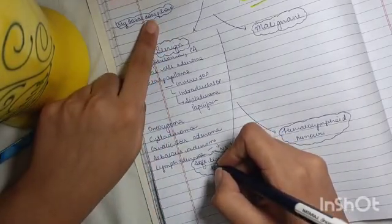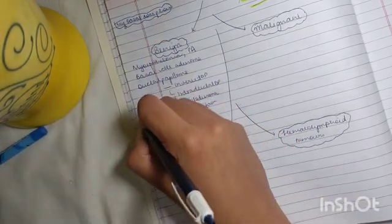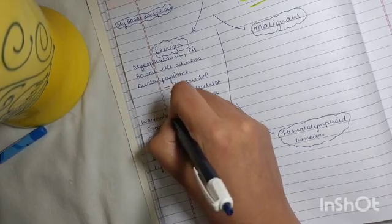By 'O,' you have written onchocytoma already. By 'W,' remember Warthin's tumor.